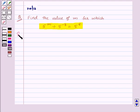Let us proceed with its solution. We are given the equation 5 to the power m divided by 5 to the power minus 3 equal to 5 to the power 5.